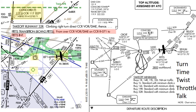The needle on our number 2 nav moves slowly to center, meaning we're now at Pitts intersection. The five T's are: turn — we don't need to because we're already on the airway we wanted; time — start one just in case; twist — probably just switch number 2 to CCR so it can back up our number 1 and tune in the 071 course; throttle — as needed for any new altitude assignments, and we can see that the MEA for the next segment is 3,500; and finally talk — only if we were told to report Pitts.